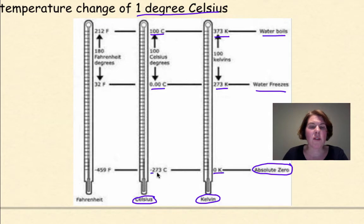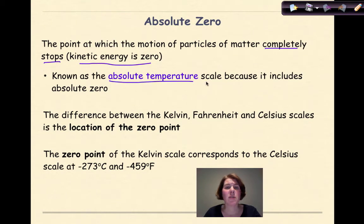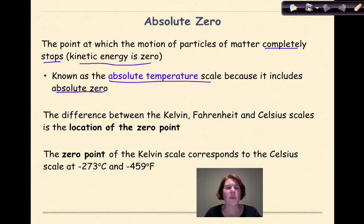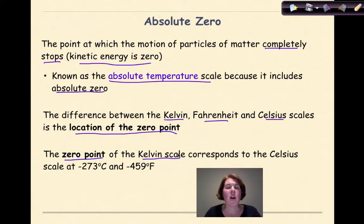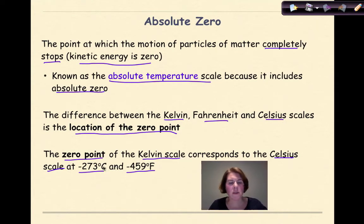Absolute zero is 0 K and −273°C. Absolute zero is the point at which the motion of particles of matter completely stops, meaning kinetic energy is zero. This is called the absolute temperature scale because it includes absolute zero — the lowest possible temperature, at least within the scope of this course. The difference between the Kelvin, Fahrenheit, and Celsius scales is the location of the zero point. The zero point of the Kelvin scale corresponds to −273°C (or −459°F).